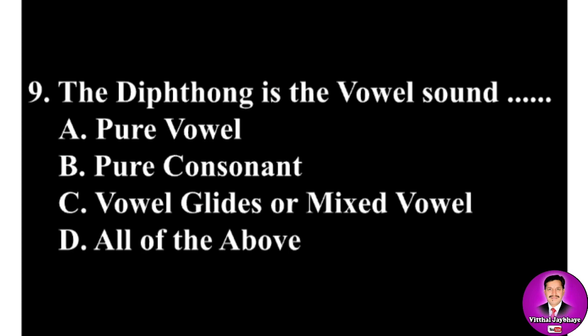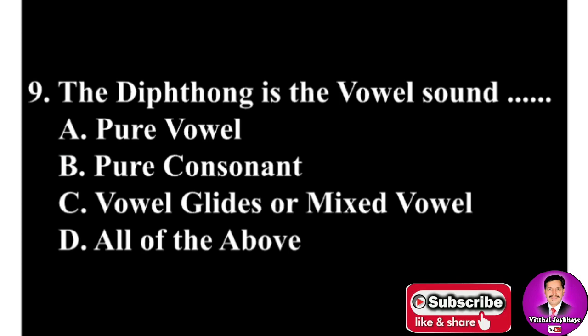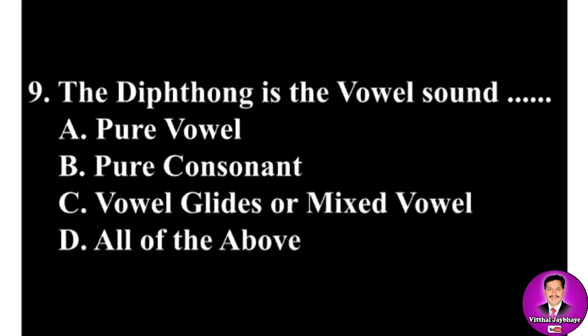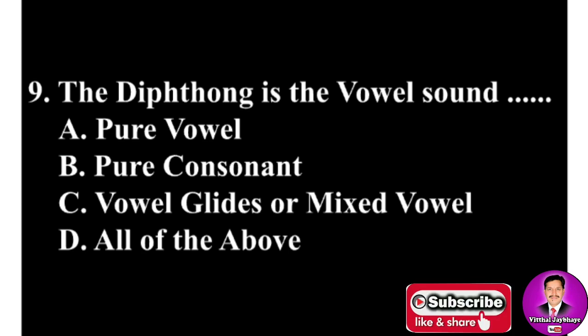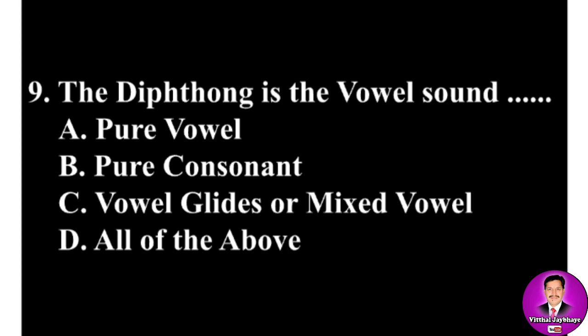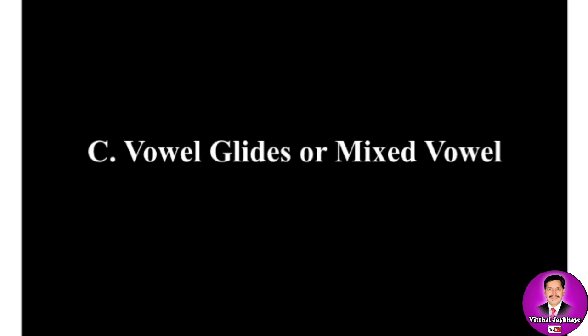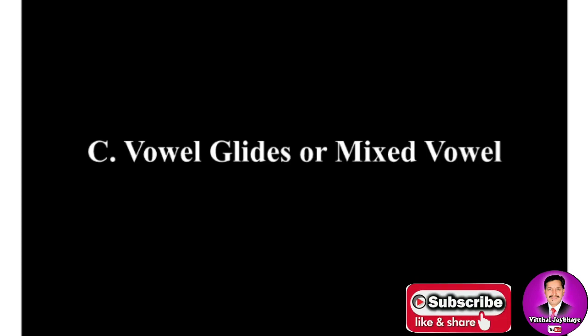Next MCQ: A diphthong is a vowel sound that is — options are: A, a pure vowel; B, a pure consonant; C, vowel glides or mixed vowel; D, all of the above. Note down this very important question. The correct answer is C — vowel glides or mixed vowel.